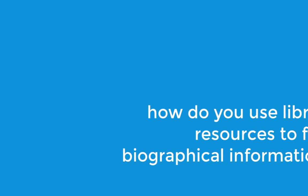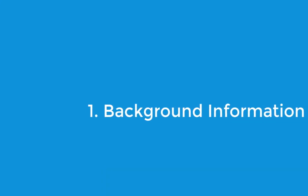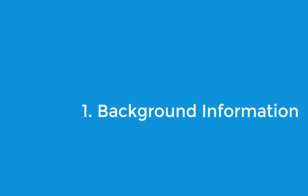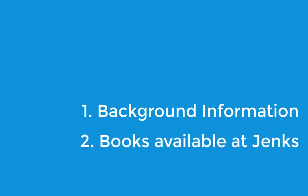Hello. In this video, you'll learn how to use library resources for finding information on your mathematics individual. There are two primary resources that can help you out: the first is background research in the form of encyclopedias and dictionaries, and the second will jump into the NOBLE catalog for searching for books on your particular individual.